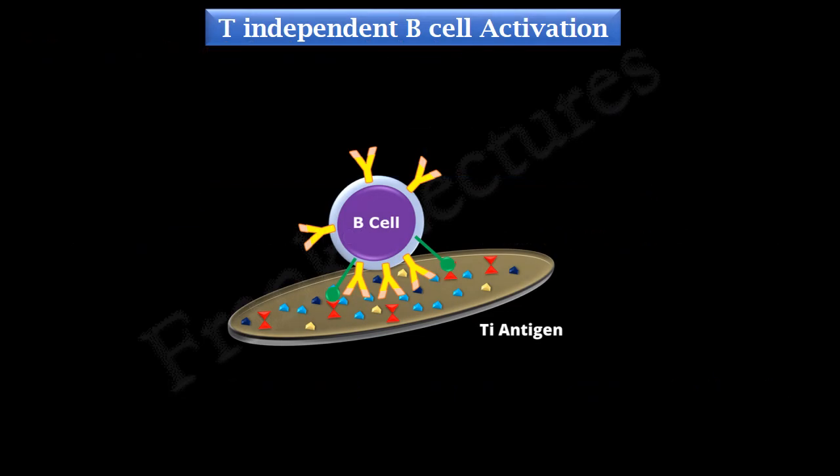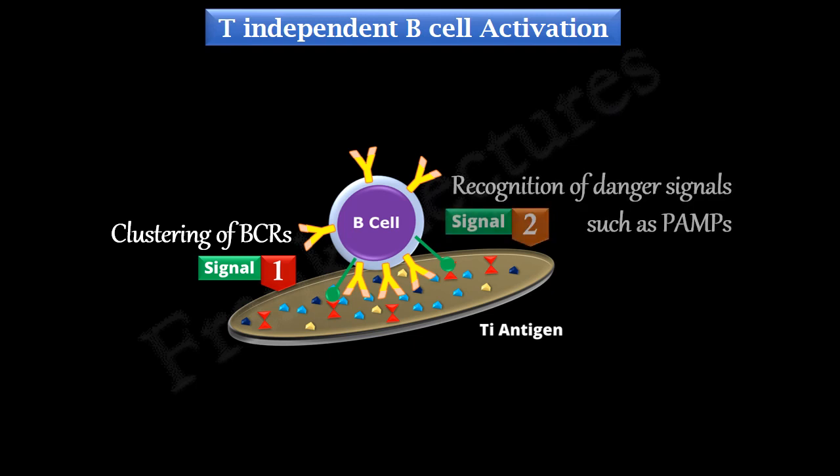T-independent B cell activation takes place when the antigen encountered by the B cell is multivalent. The first signal for B cell activation is generated by clustering or cross-linking of B cell receptors on binding to the multivalent antigen. The second and final signal for B cell activation is generated by danger signals such as PAMPs associated with that antigen.